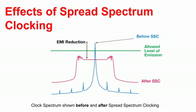Spread spectrum clocking, or SSC, is a controlled modulation technique where the peak amplitude of a digital clock signal is reduced by shifting the frequency. This, in turn, allows the radiated energy to be spread across a wider frequency spectrum without putting enough energy into any one band to exceed the statutory limits.